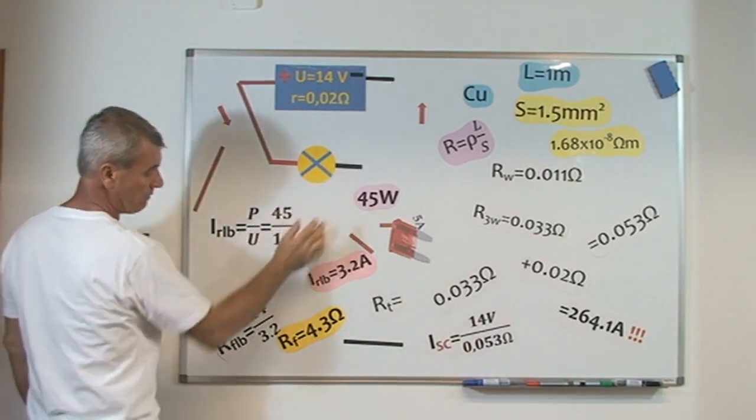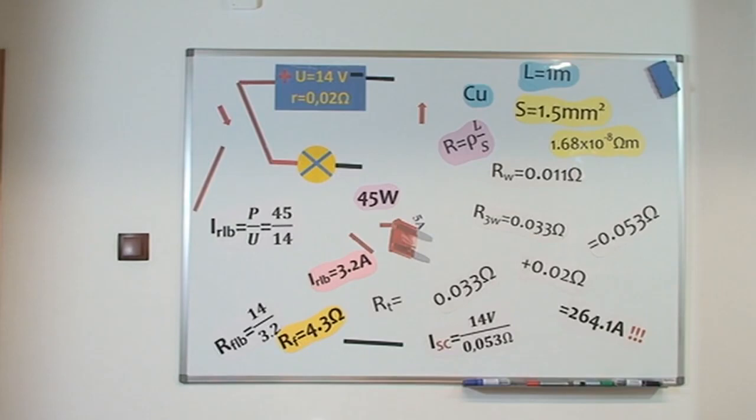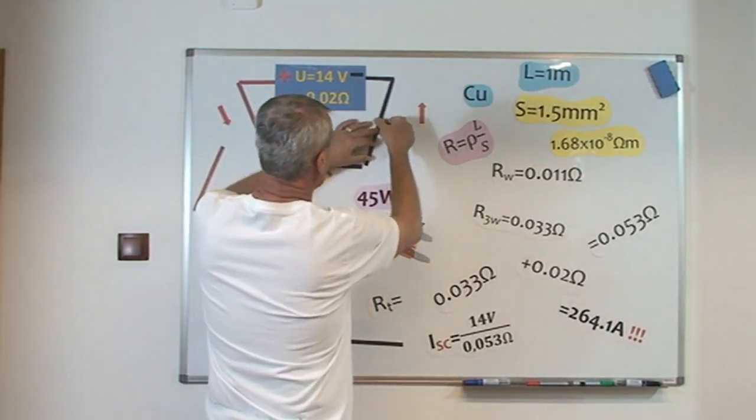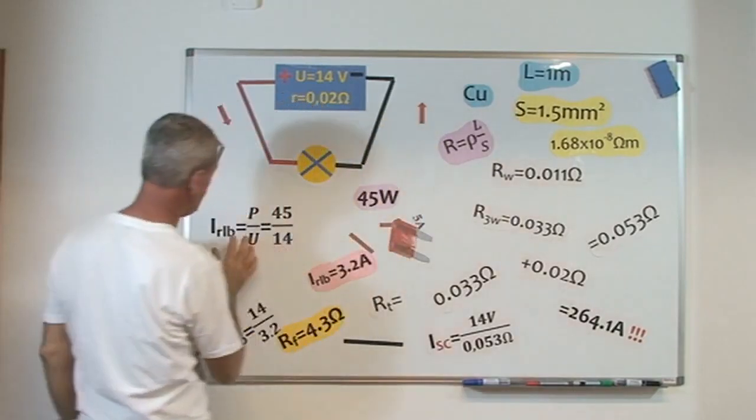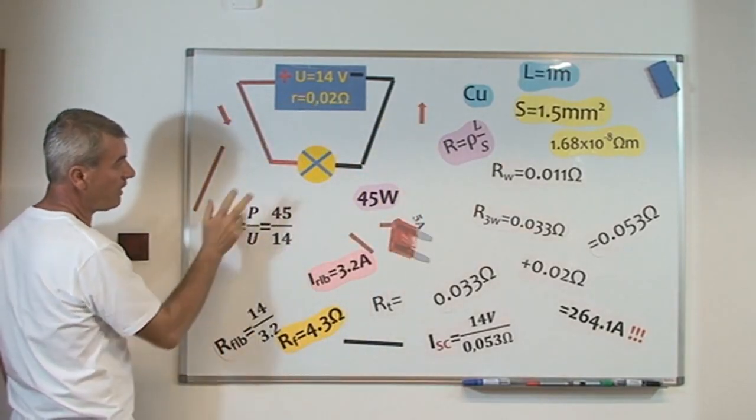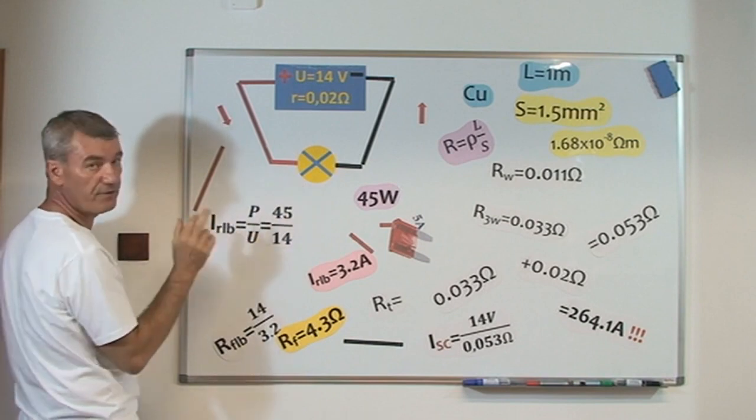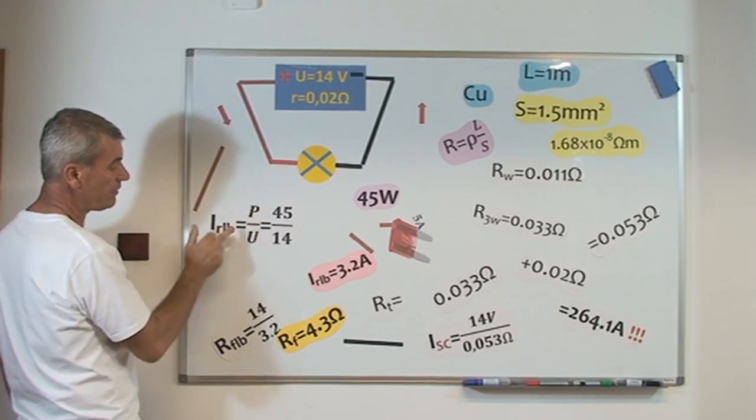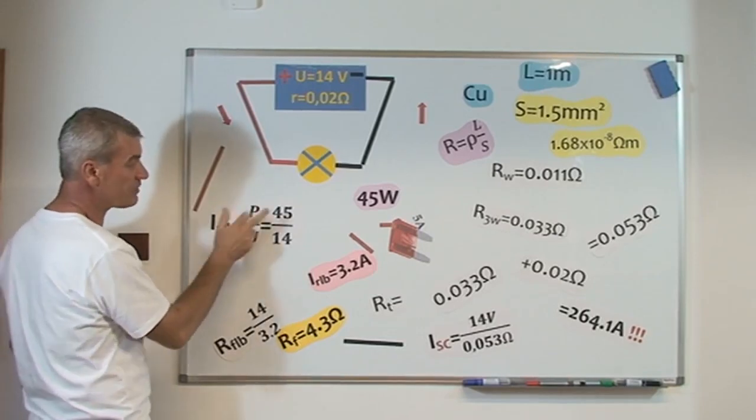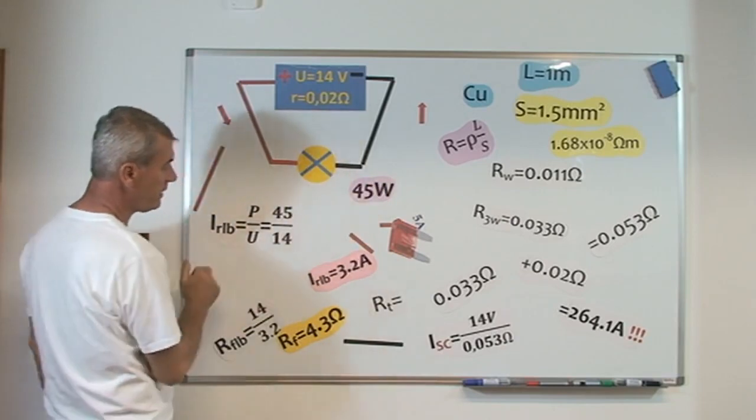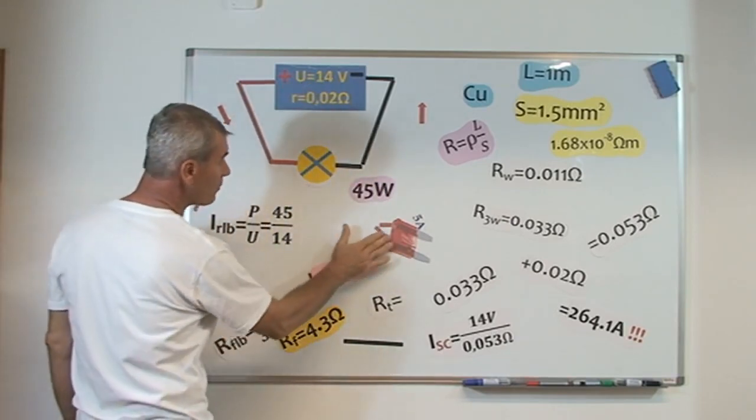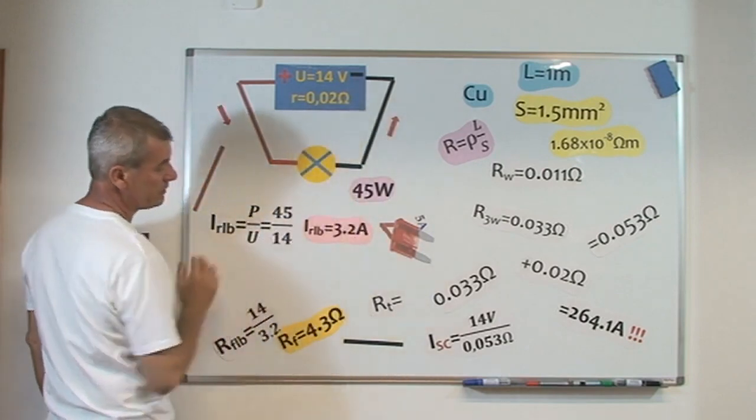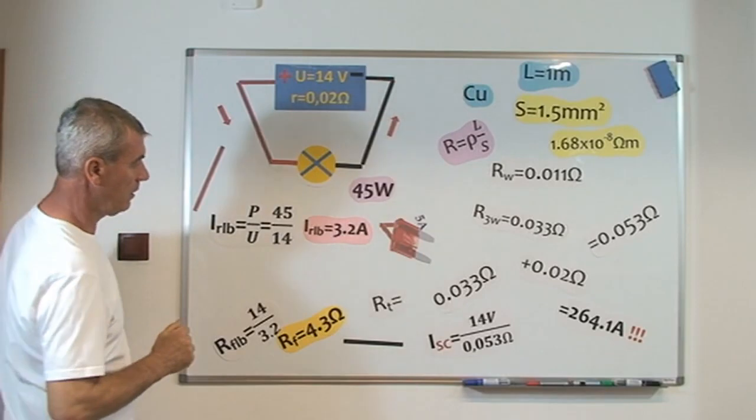Our circuit is okay and for the rated current, the rated current that passes through the light bulb, for the filament of the light bulb, equals power divided by volts, equals 45 watts divided by 14 volts, equals 3.2 amps.